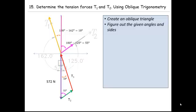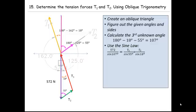And of course, once we've gotten two angles in a triangle, we can quickly calculate the third. Since we do now have one side of an oblique triangle and the three angles on the interior, we can use the sine law to solve for our two unknown tensions.